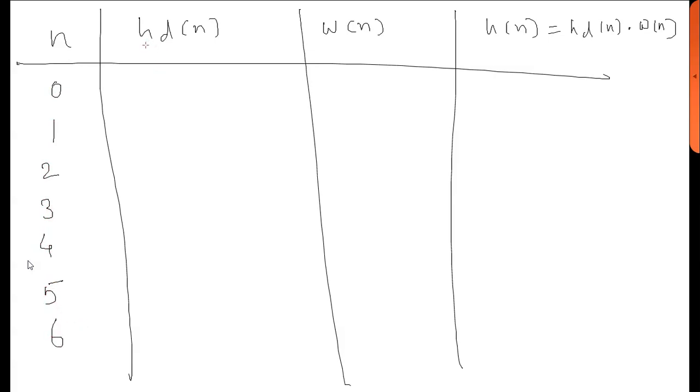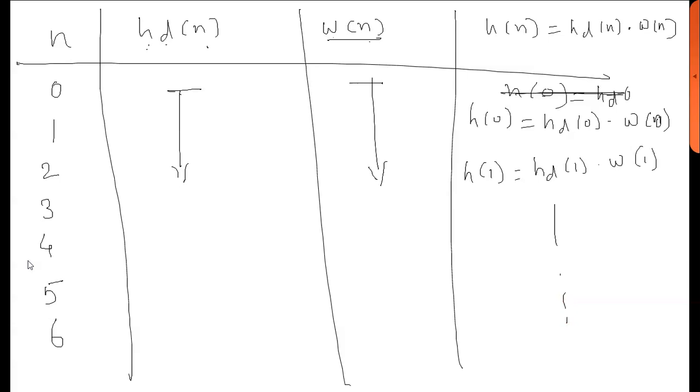We will find corresponding values of h_d(n) from the equation and write them in the table. We will find corresponding values of w(n). Then h(n) = h_d(n) × w(n) for each n value. Thank you.